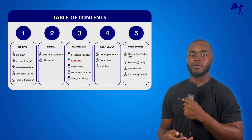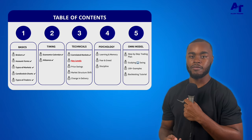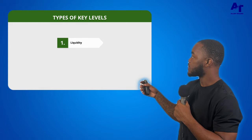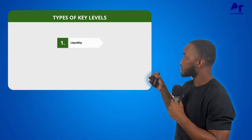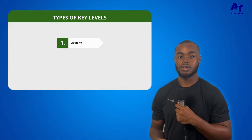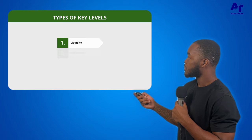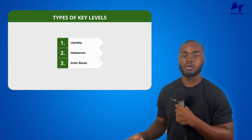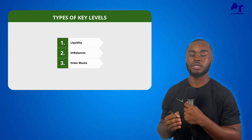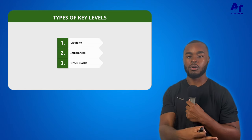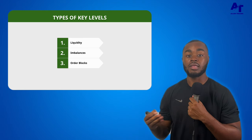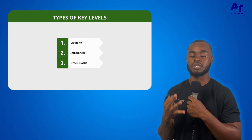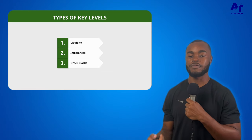We are at the part of the course where we talk about key levels, where we get into the fun of price action. We're going to talk about the three different types of key levels. The first one is liquidity, the second one is imbalances, and the third one is order blocks. There are only three categories you need to know for key levels, though there are different types within each category.